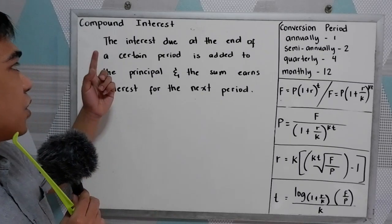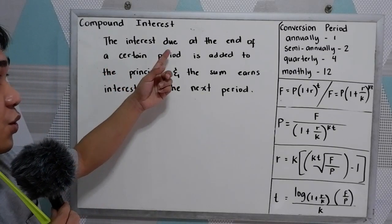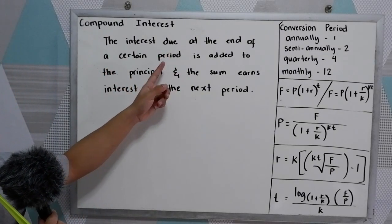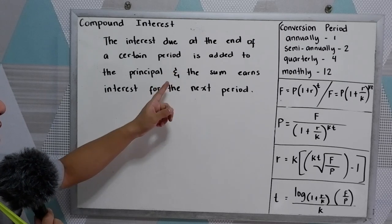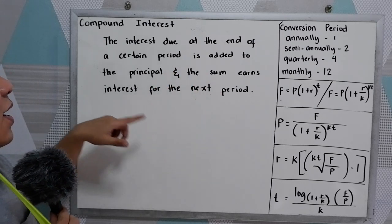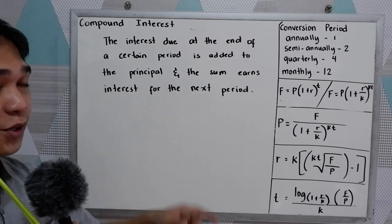Compound interest is the interest due at the end of a certain period is added to the principal and the sum earns interest for the next period.